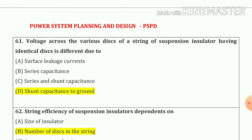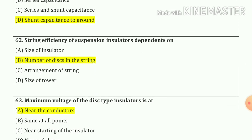Question number 61: voltage across the various discs of a string of suspension insulators having identical discs is different due to shunt capacitance to ground — option number D. Question number 62: string efficiency of suspension insulator depends on the number of discs in the string — option number B.